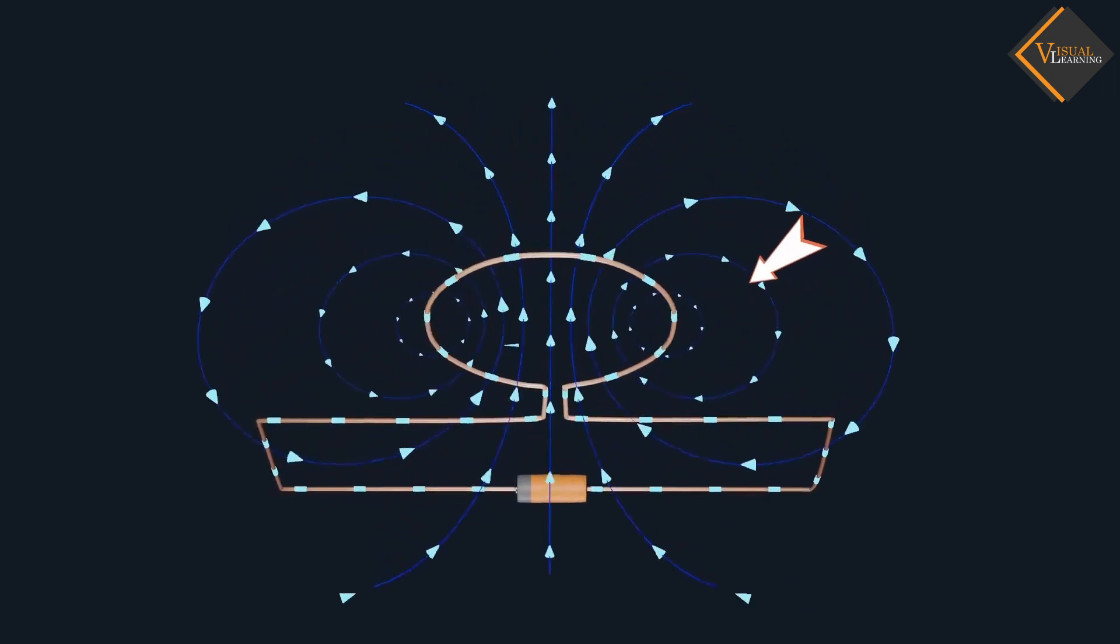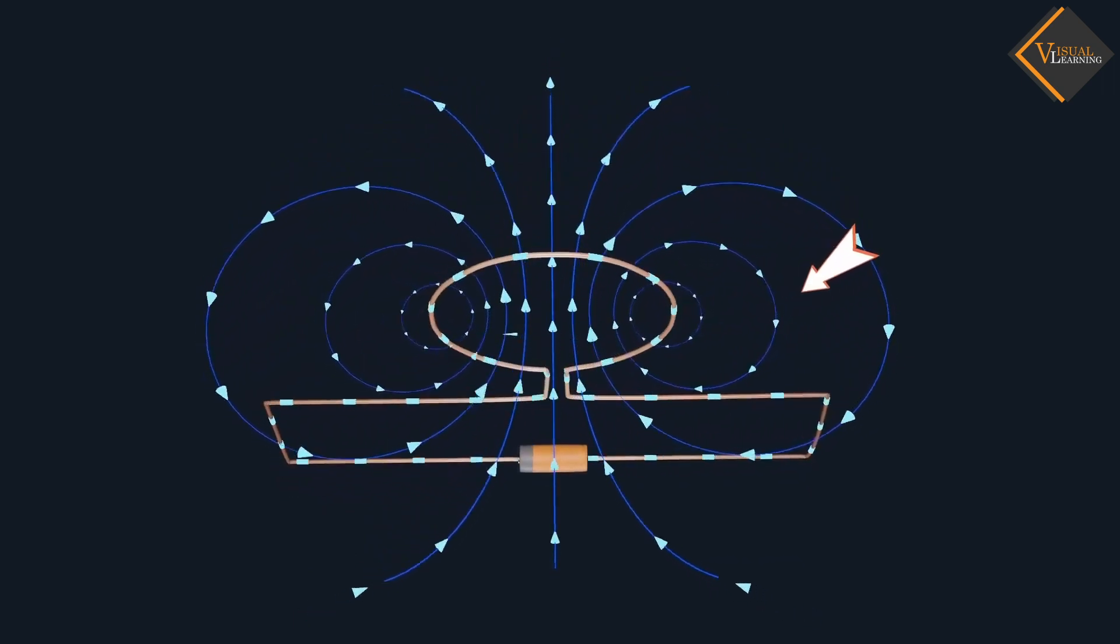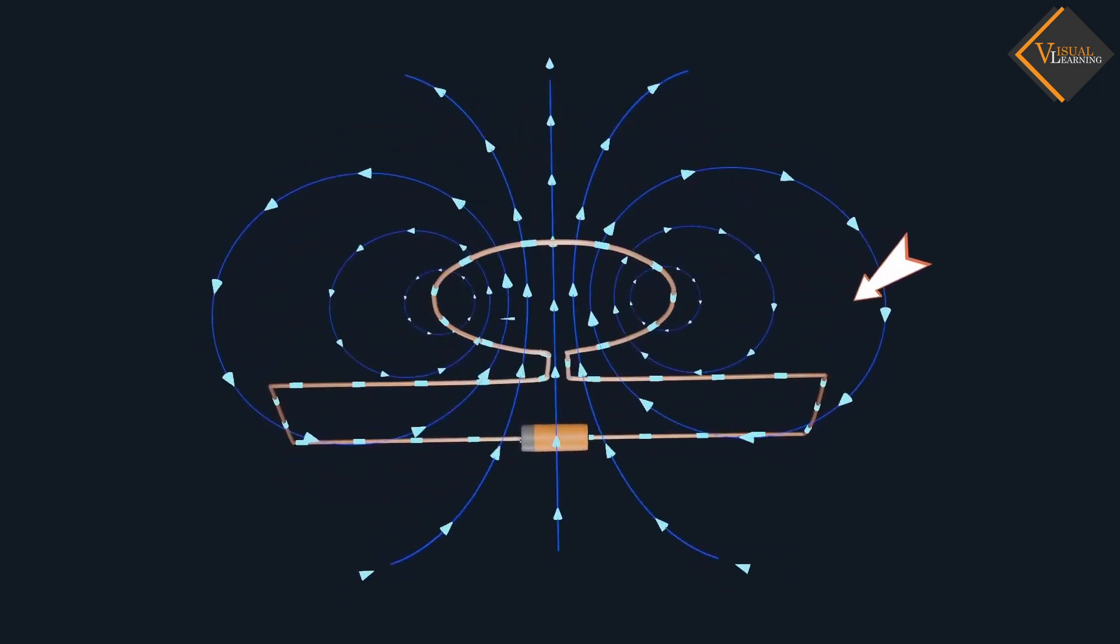These concentric circles would become larger and larger as we move away from the wire. When we reach at the center of the circular loop, the arcs of these big circles would appear as straight lines.